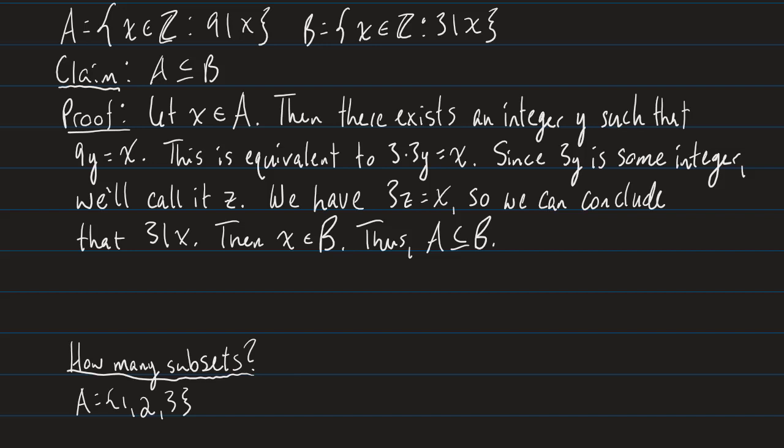The key idea is that we let X be arbitrary — we never said what X was, just that it's some element of A. We showed logically that this arbitrary element must also be in B. So any specific element of A you pick will always be in B, and thus we can conclude that A is a subset of B.